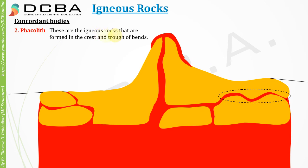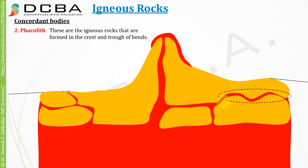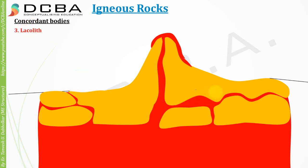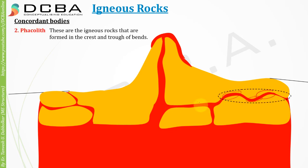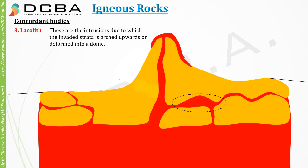Igneous rocks formed in the crest and trough of a bend are called faculites — a type of concordant body. When the magma lodged inside arches the overlying strata upward into a dome, such a structure is called a laccolith.